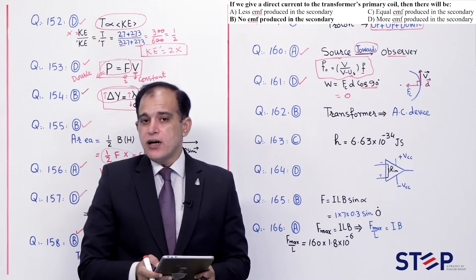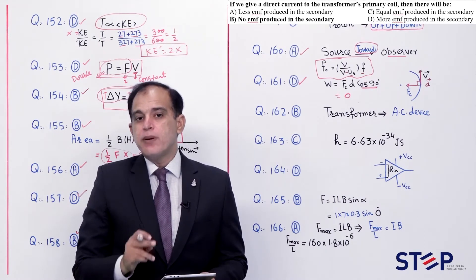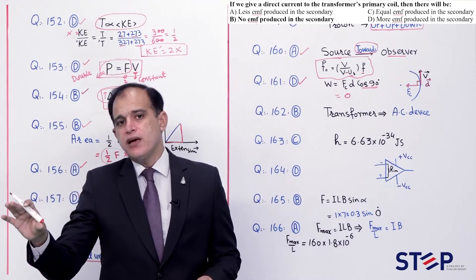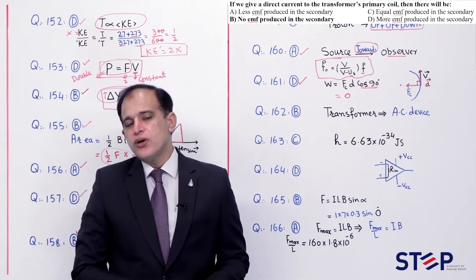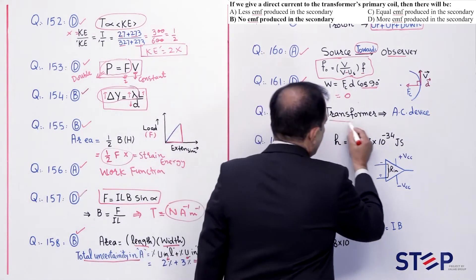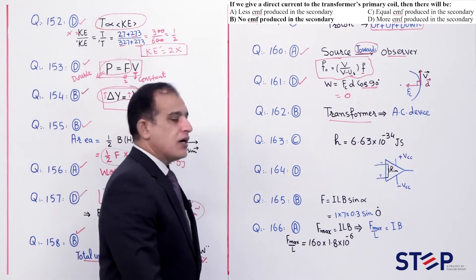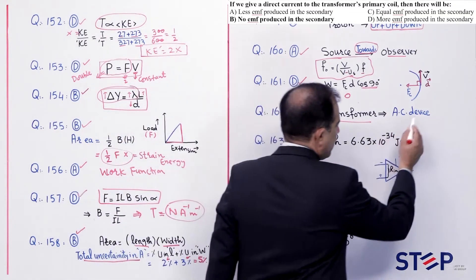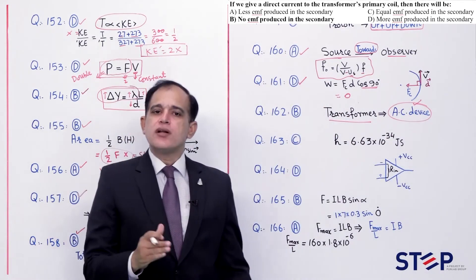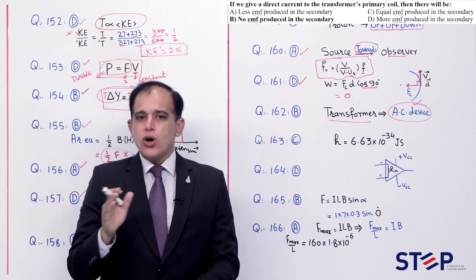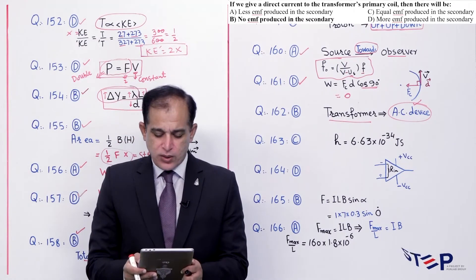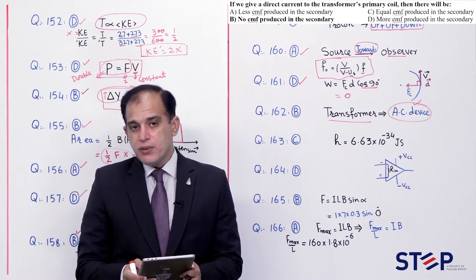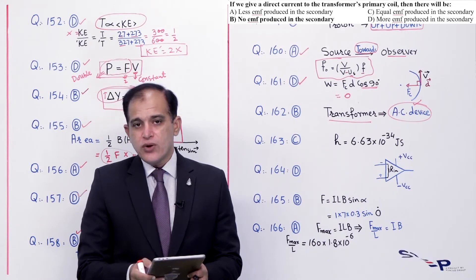Question number 162: If we give DC to transformer primary coil. Transformer mein primary aur secondary coil magnetically linked hoti hain. DC dene se magnetic flux mein change nahi aata. Flux ka change nahi hoga toh secondary mein koi EMF induce nahi hogi. Transformer sirf AC ka device hai. Correct option: Beta - no EMF produced in secondary.